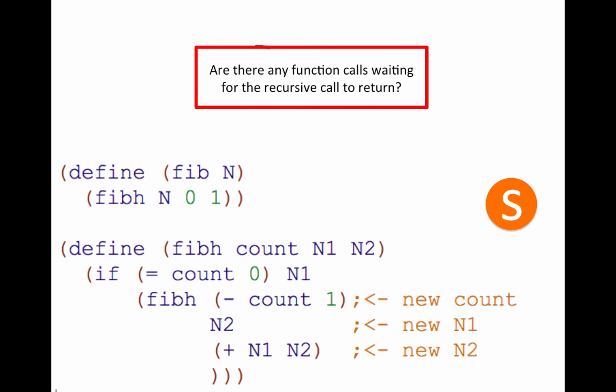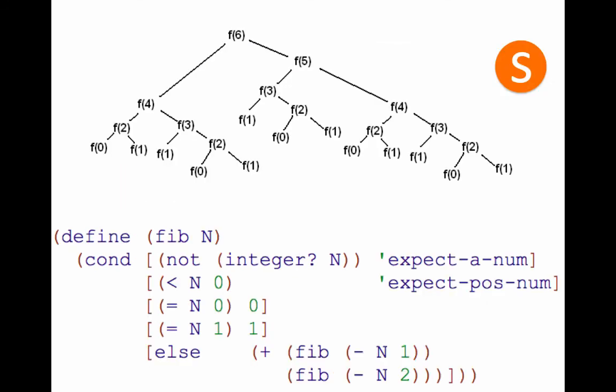So check it out. Are there any function calls that are waiting for the recursive call return? No. So that makes this tail recursion. See right here, it's just fibh. There's no other calculations that are waiting. If we compare this to this other version, it's not that much more complicated, but this other version, look at how many function calls are made. And with our new tail recursive version, we only have to make n function calls for fib of x.